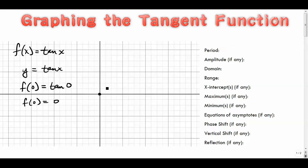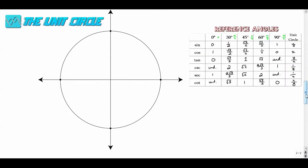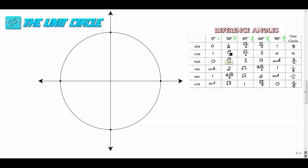In other words, the point (0, 0) is on the graph of tangent. Here's why — it comes back to the unit circle. I keep coming back to this; I revisit the reference angle chart and the unit circle pretty much every day because the connections are really, really important.